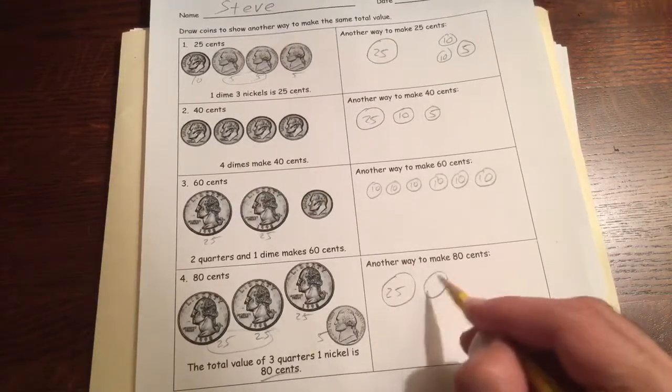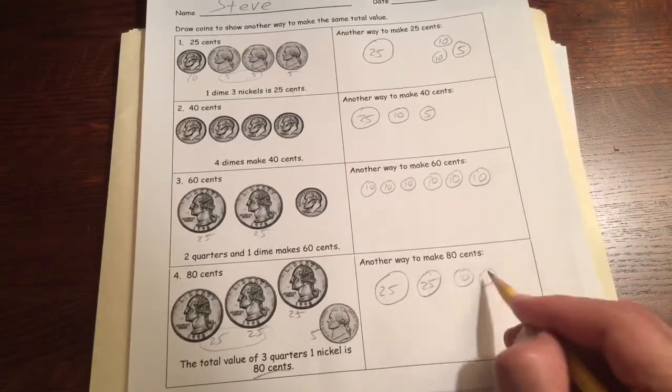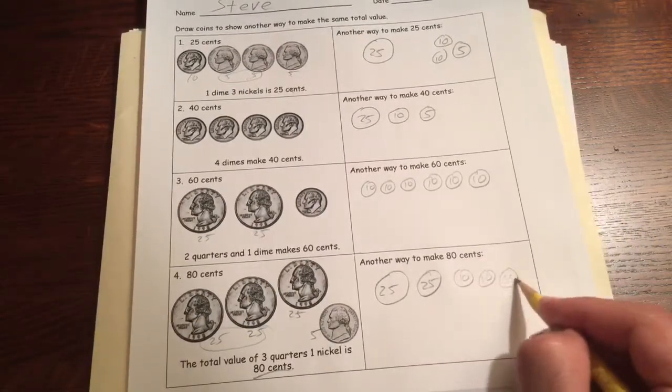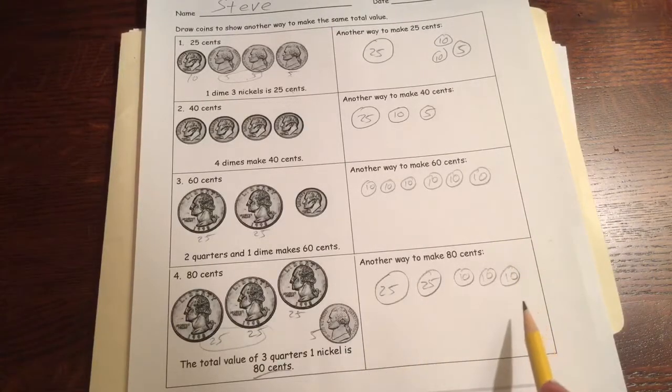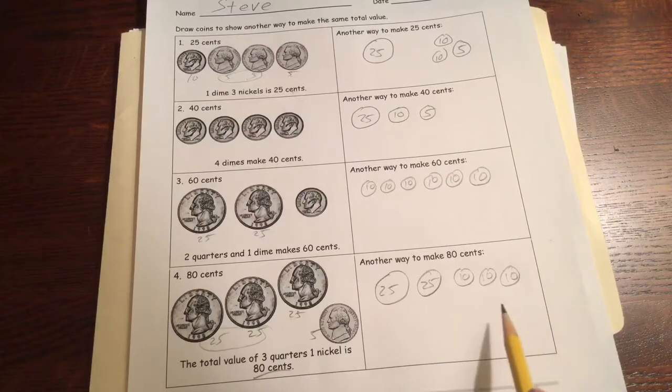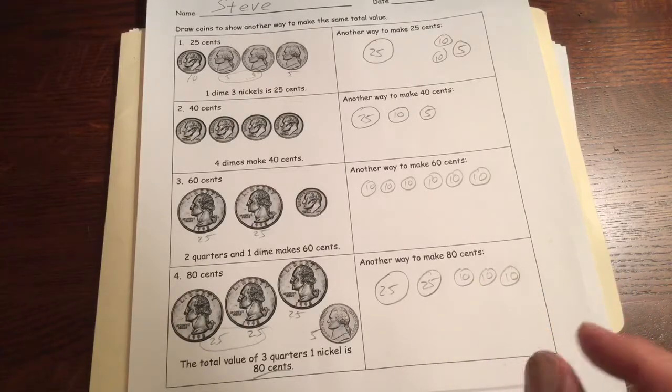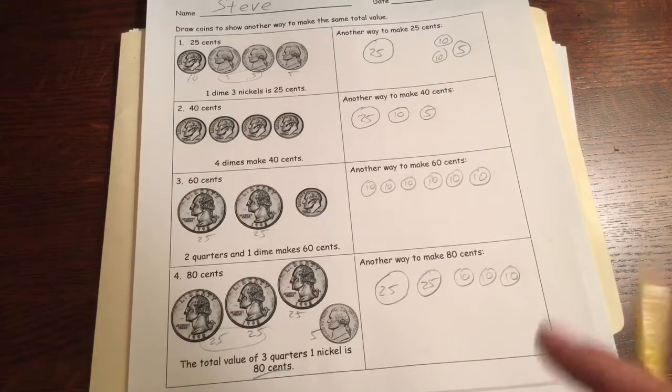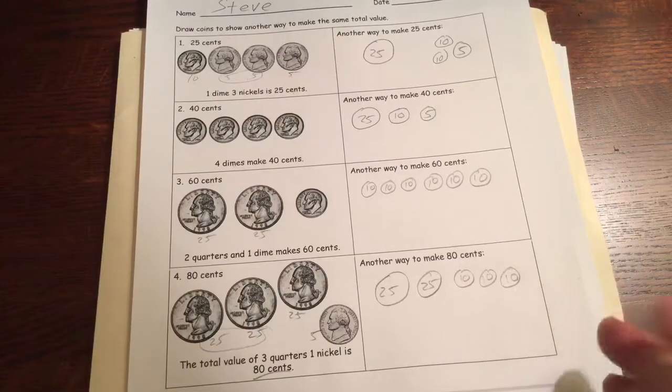You could do it with two 25's. That's 50, 60, 70, 80. You could do it like that. You could do it with eight dimes. Eight 10's would be 80. You could do it with nickels. You'd be drawing an awful lot of nickels. Or you could just substitute a couple of nickels for one of the dimes. There's lots and lots of different ways you could do 80 cents. That's just one of the ways.